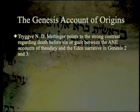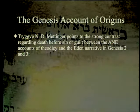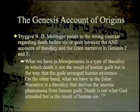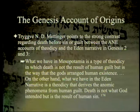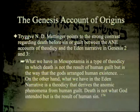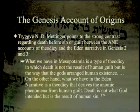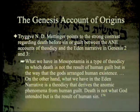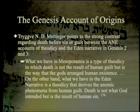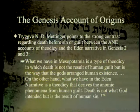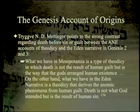Trig of Mettinger points to the strong contrast regarding death before sin between ancient Near Eastern accounts and the Eden narrative in Genesis 2-3. This means we must be very cautious about using ancient Near Eastern accounts to explain what the Bible really means, since they are markedly different in certain areas. In Mesopotamia, death is not the result of human guilt but the way the gods arranged human existence. In the Eden narrative, death derives from human guilt — it is not what God intended but the result of human sin.